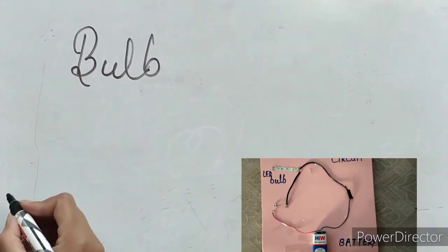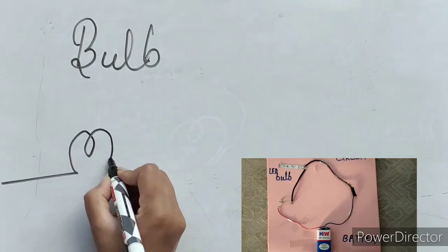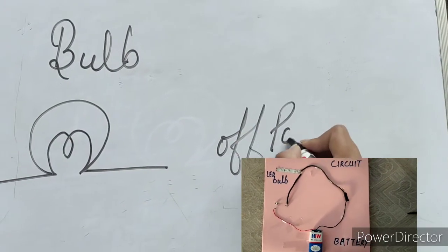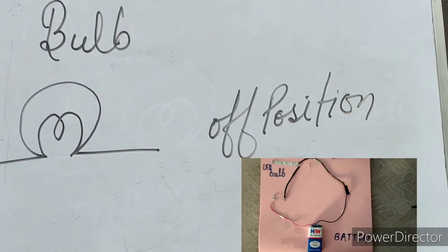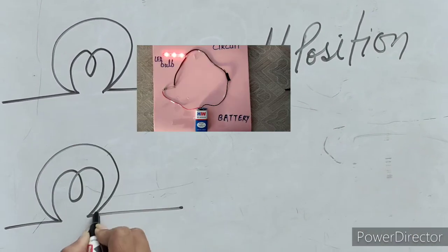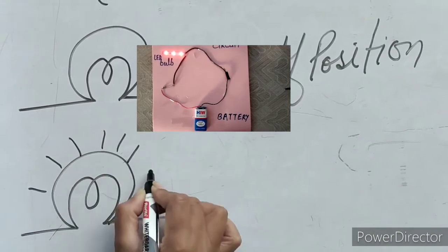Now the symbol of bulb. The bulb symbol has two states: on position and off position. This is the symbol of bulb when it is in off position. This is the symbol of bulb when it is in on position.